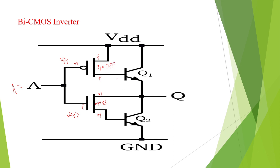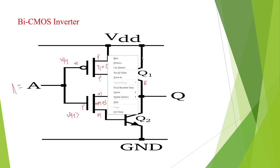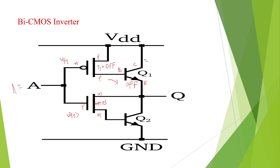If T1 is off, there is no sufficient VBE across the emitter, base, collector of the BJT. So if it is in off condition, there is no current flow. Hence it also goes to off condition. If both are off, it acts as an open circuit, so there is no flow from supply to output.